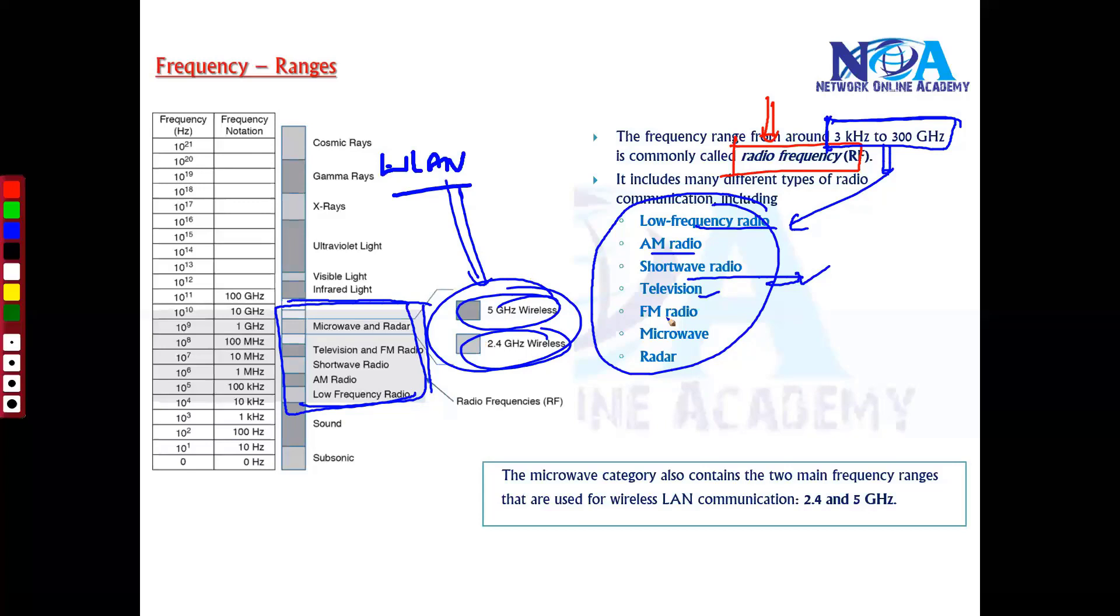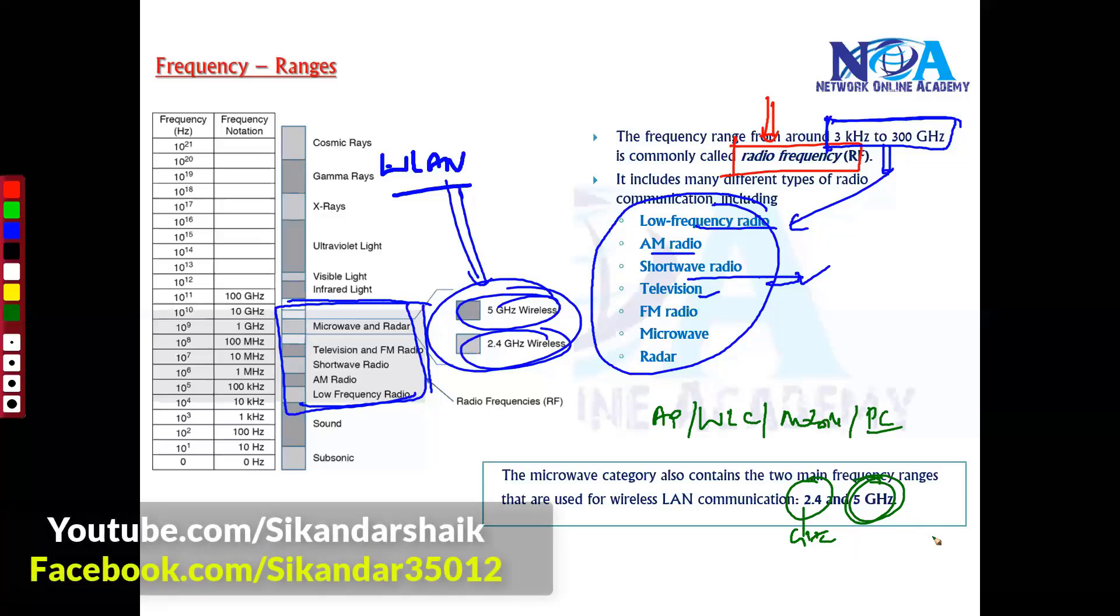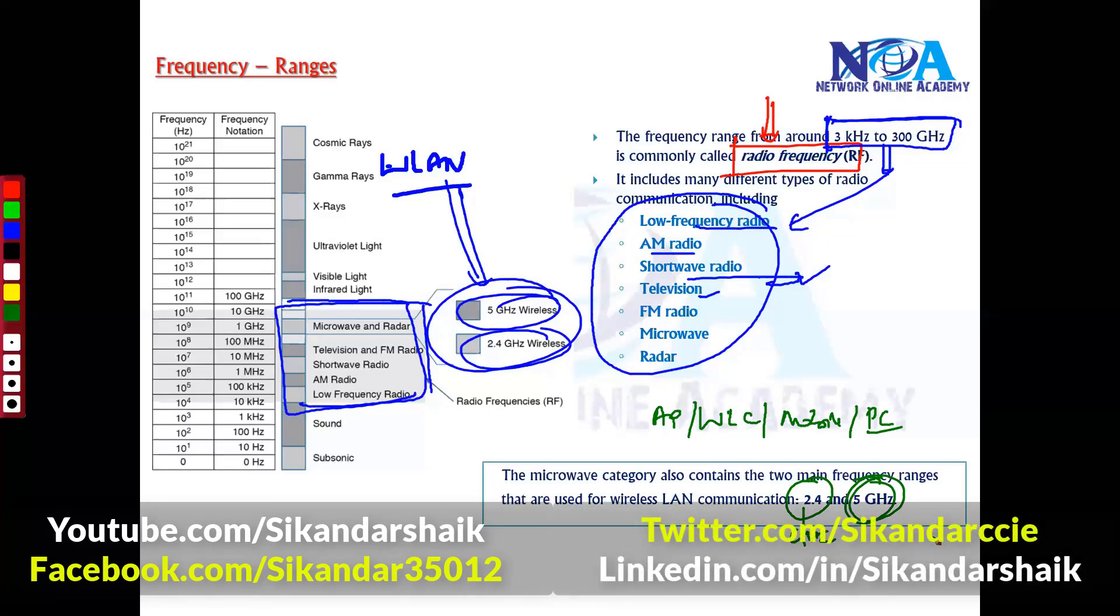The 2.4 gigahertz and 5 gigahertz ranges are the two common frequency ranges used by most wireless standards in wireless products. Examples include access points, WLCs, mobile wireless connections, and NICs used inside PCs or laptops. These devices must operate on these specific frequencies, and to connect, they must operate on the same frequency band.